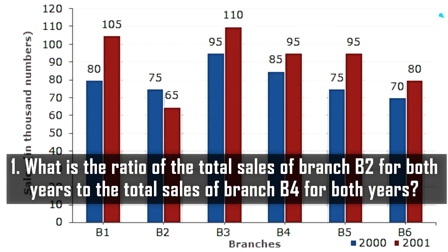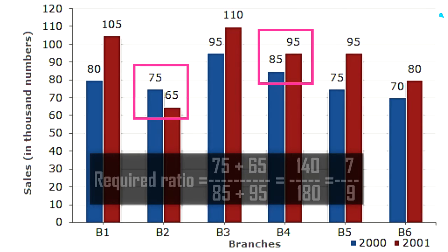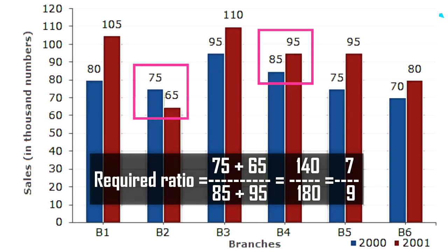The first question asks: what is the ratio of total sales of branch B2 for both years to total sales of branch B4 for both years? We add both sale values for B2: 74 plus 65, and divide by the total for B4: 85 plus 94. That gives 139 divided by 179, which simplifies to 7 by 9.